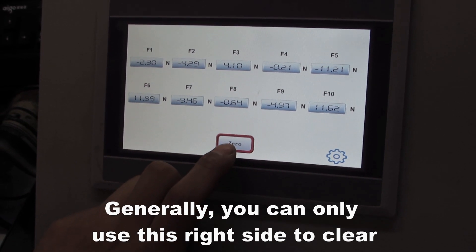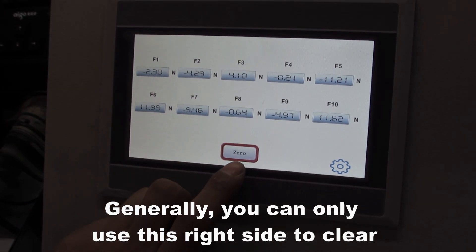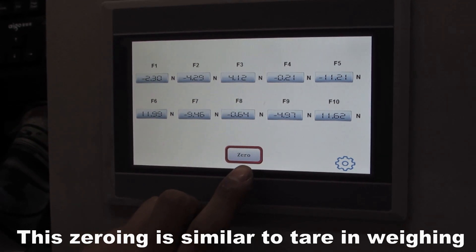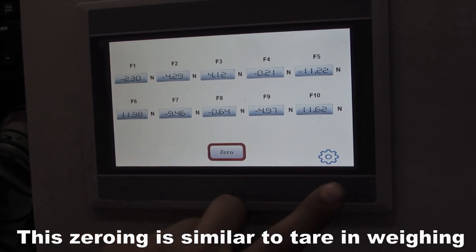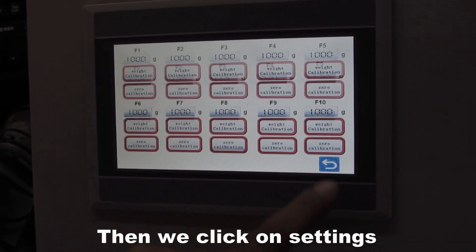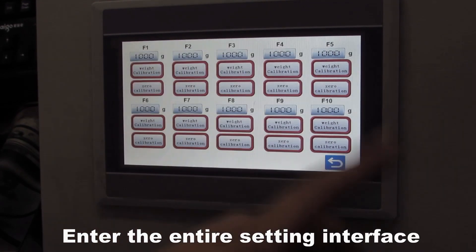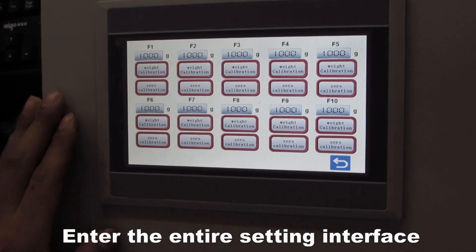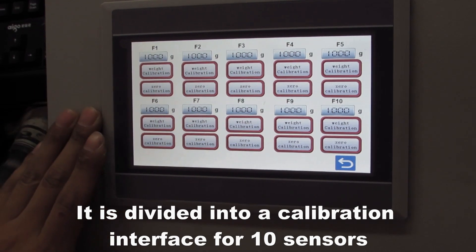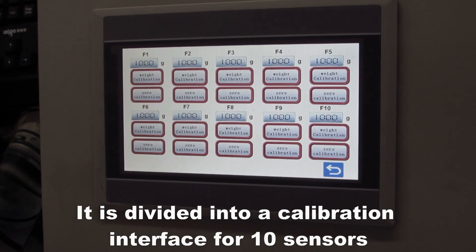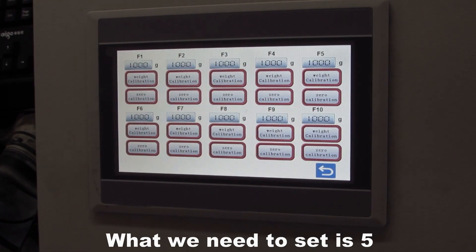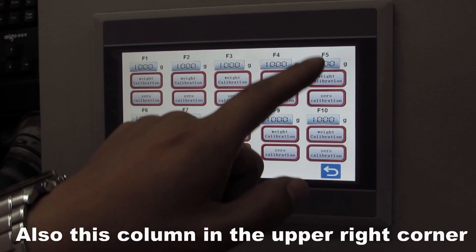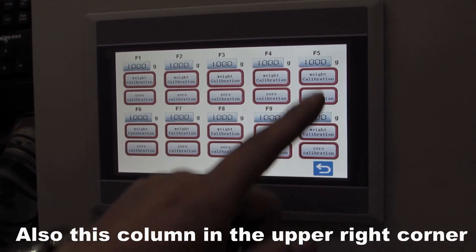You can only use this right-side clear. This zeroing is similar to tare in weighing. Then we click on settings and enter the entire site interface. It is divided into a calibration interface for 10 sensors. What we need to set is F5, also this column in the upper right corner.